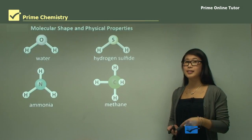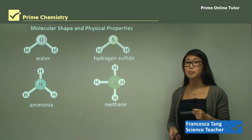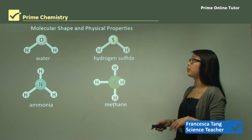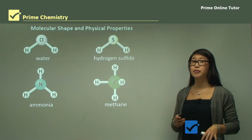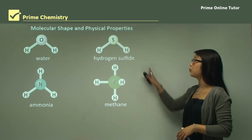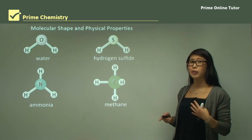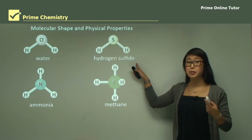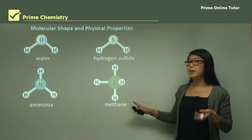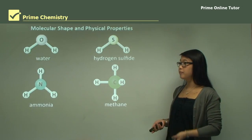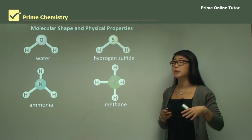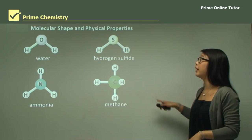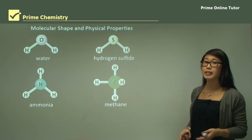In our last lessons we looked at whether molecules are polar or not based on their shape. Now we're going to look at whether the shape of the molecule affects physical properties. We can see the shape of the molecule by remembering VSEPR theory — whether they're bent, tetrahedral like methane, or pyramidal like ammonia. This can determine whether a molecule is polar or not, and therefore we can look at physical properties based on that.